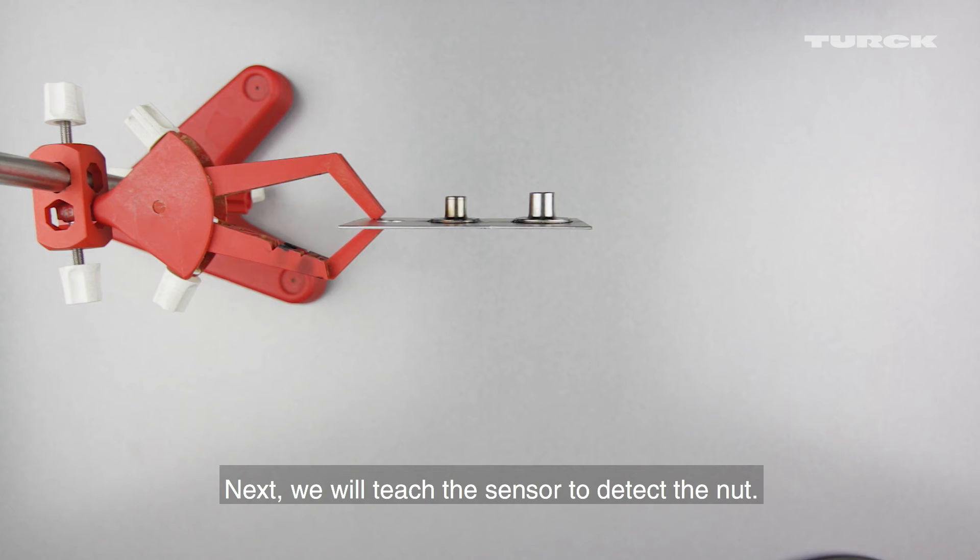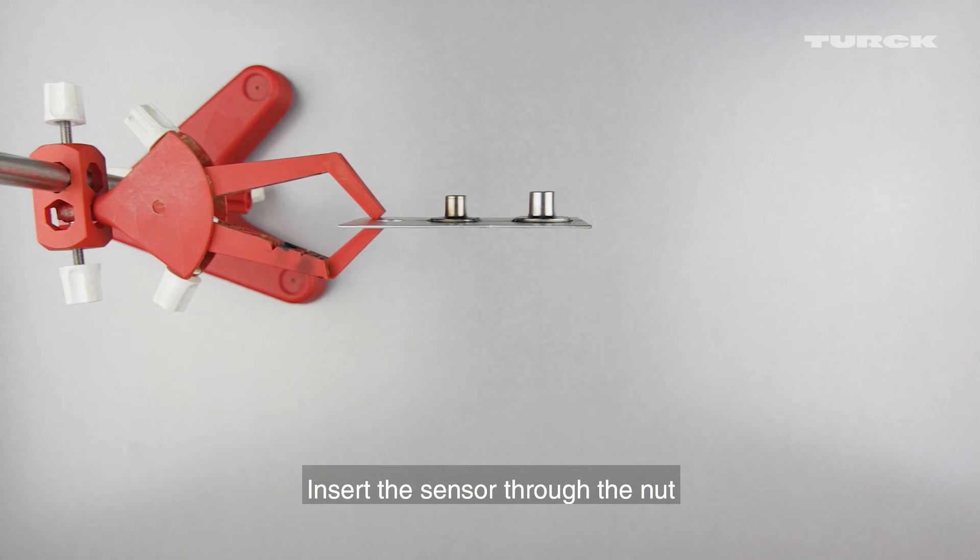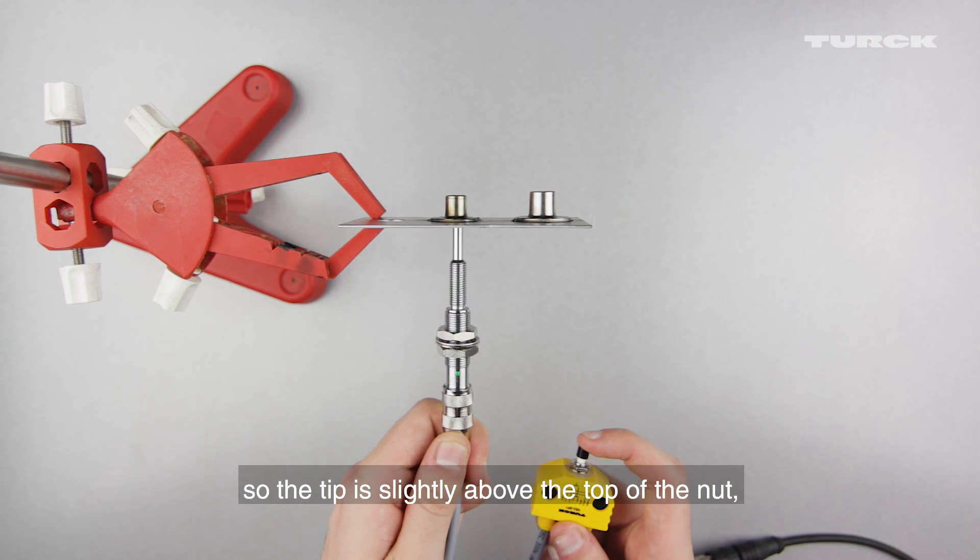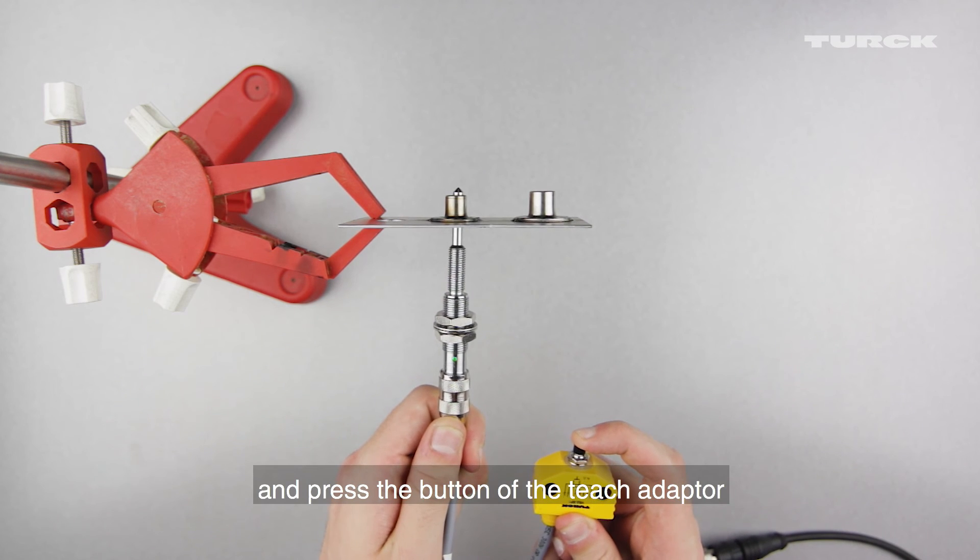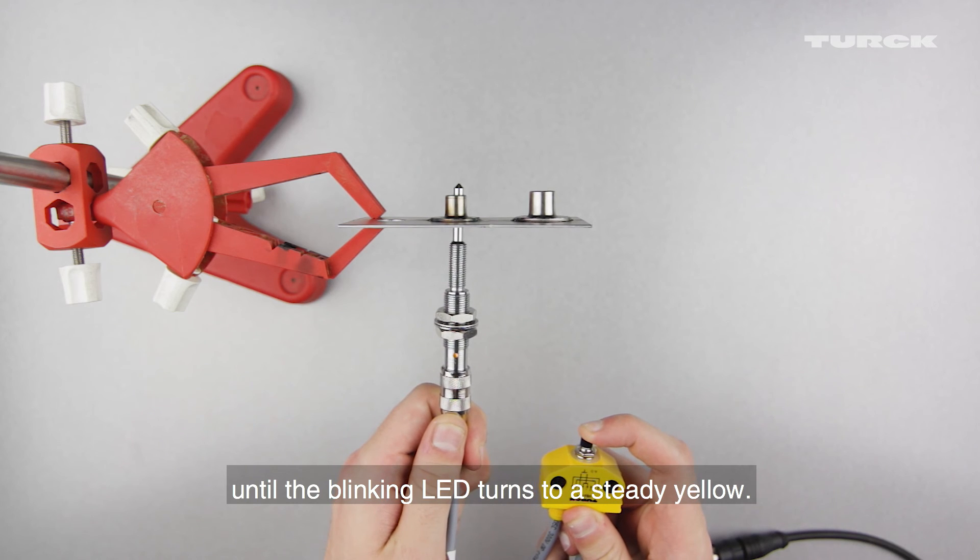Next we will teach the sensor to detect the nut. Place a nut on the sheet metal. Insert the sensor through the nut so the tip is slightly above the top of the nut and press the button of the teach adapter until the blinking LED turns to a steady yellow.